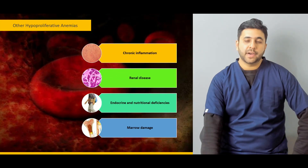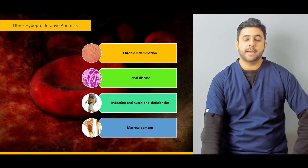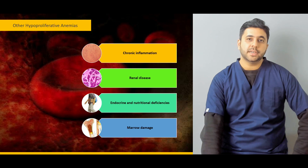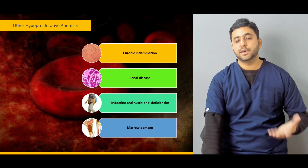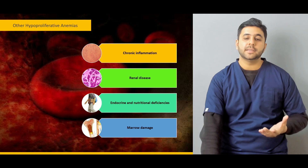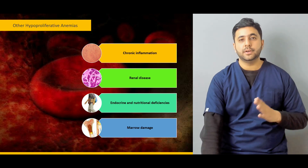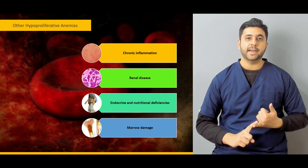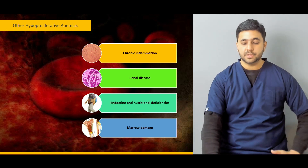After the thorough discussion of iron deficiency anemia — covering signs and symptoms, the labs we need to understand, and the treatment options available — we are going to touch on the other types of hyperproliferative anemias, which are much less common compared to iron deficiency anemia. It is important to understand how they develop in order to differentiate them from iron deficiency anemia and to treat them differently.